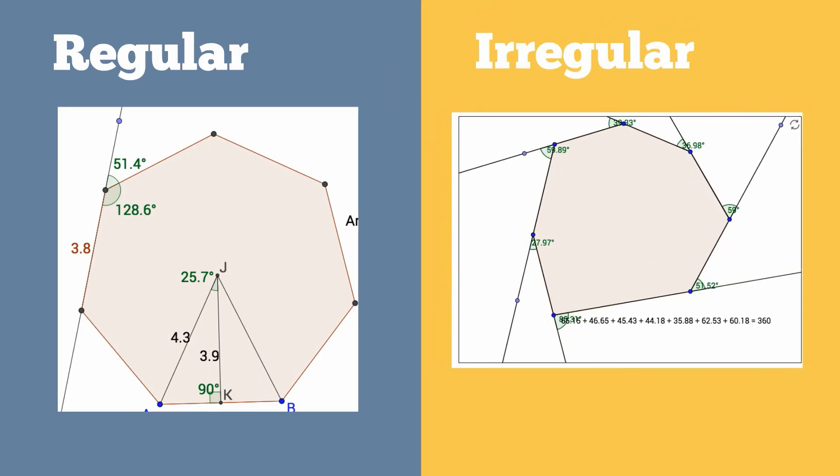Heptagons can also be irregular, which means that they do not have equal lines or equal angles.